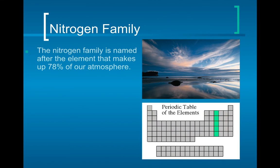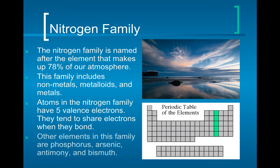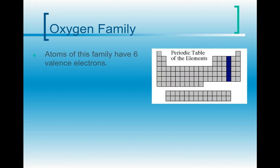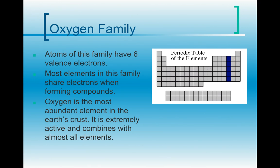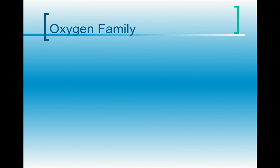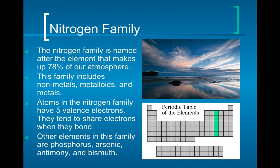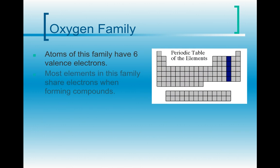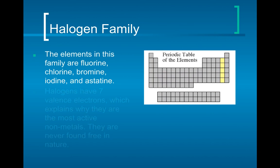The nitrogen family is named after the element that makes up 78% of our atmosphere. Nitrogen has five valence electrons. Then you have the oxygen family with six valence electrons — and remember, oxygen makes up most of the Earth's crust while nitrogen dominates the atmosphere.